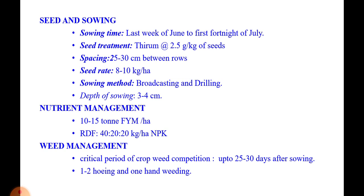For nutrient management, apply compost or FYM at 5 to 10 tons per hectare before the last harrowing. The recommended dose of fertilizer for sawan or barnyard millet is 40-20-20 kg NPK per hectare. All fertilizers should be applied at the time of sowing as a basal dose. If irrigation facility is available, half of the nitrogen should be top dressed in the standing crop after 25 to 30 days of sowing.